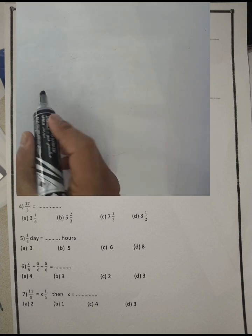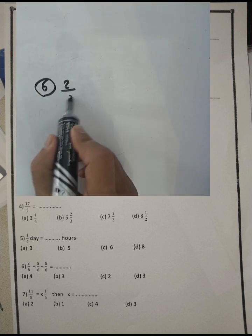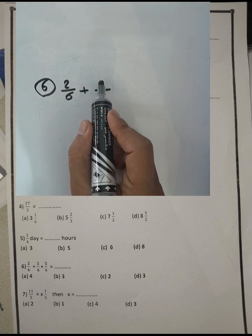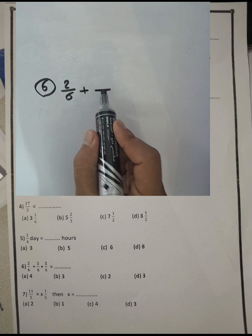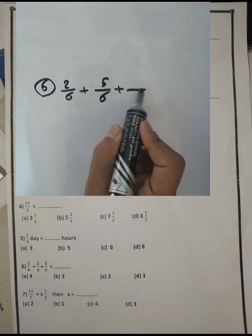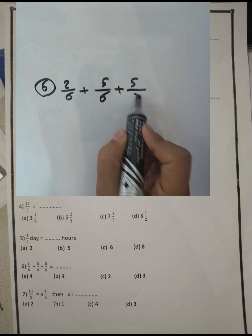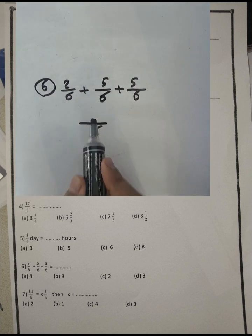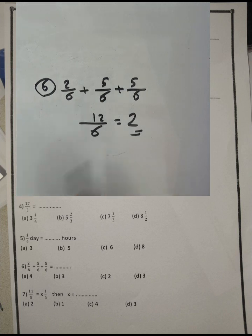Next: two over six plus five over six plus five over six. Write six in the denominator. Five plus five plus two equals twelve. Twelve divided by six equals two, so the result is two.